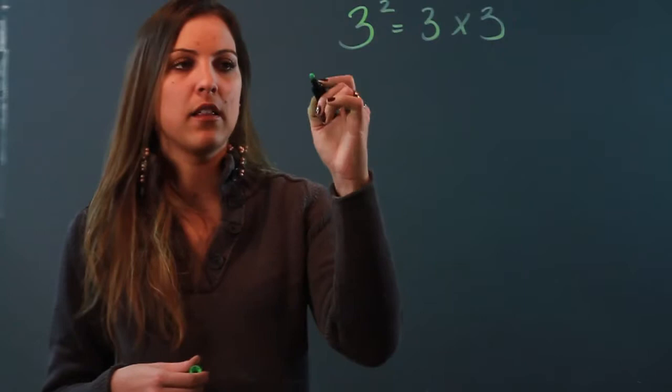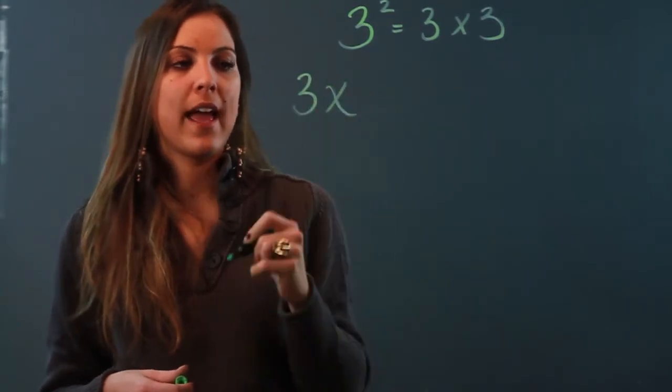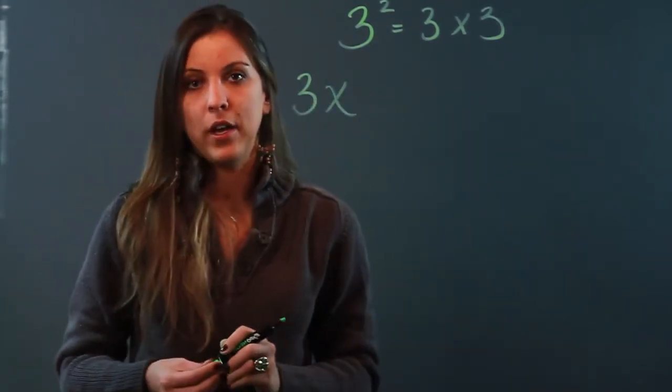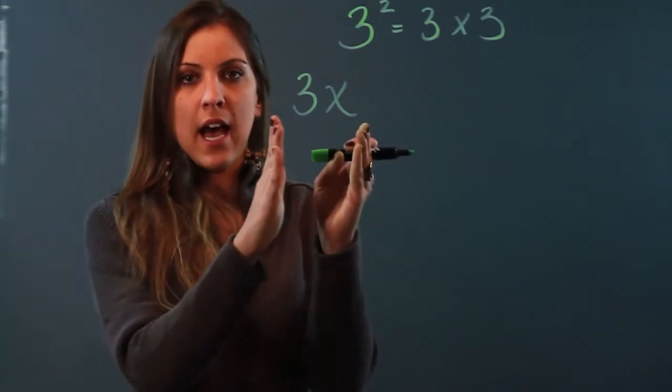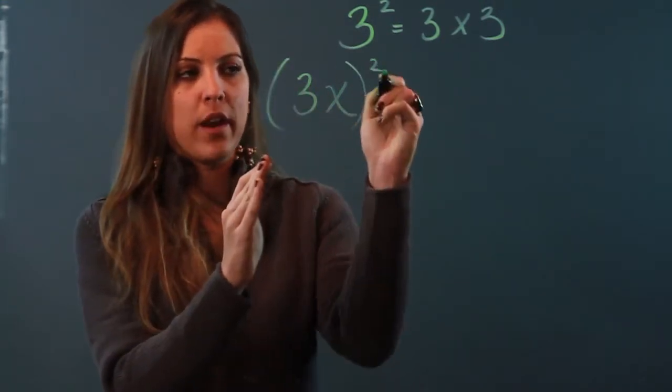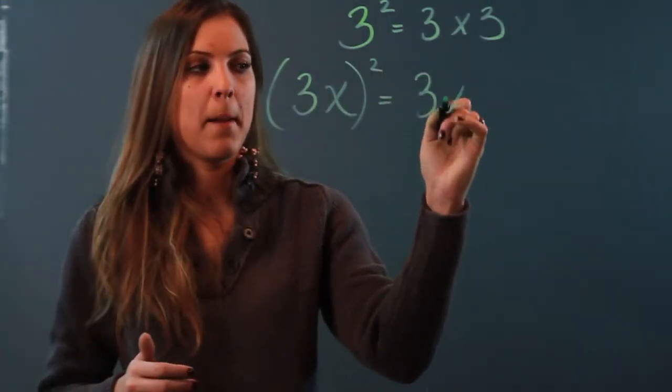So if I go ahead and add a variable to that to make it look a little more complicated and I ask you to square that monomial, I'm asking you to take this entire monomial, square it, which means multiply it by itself.